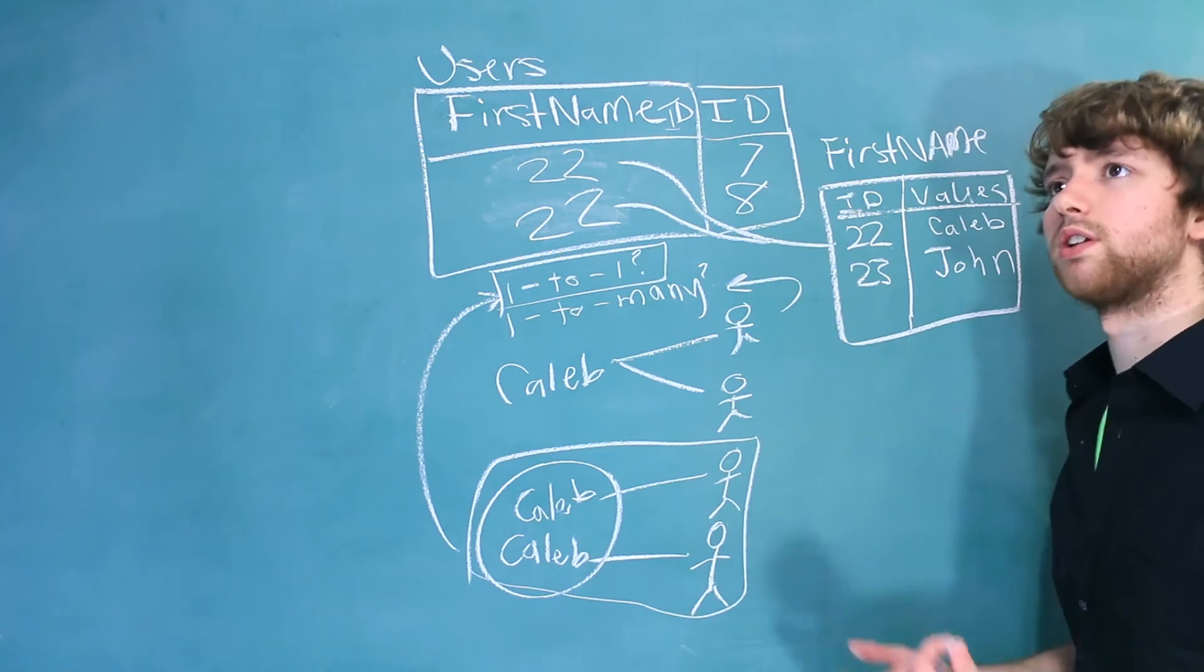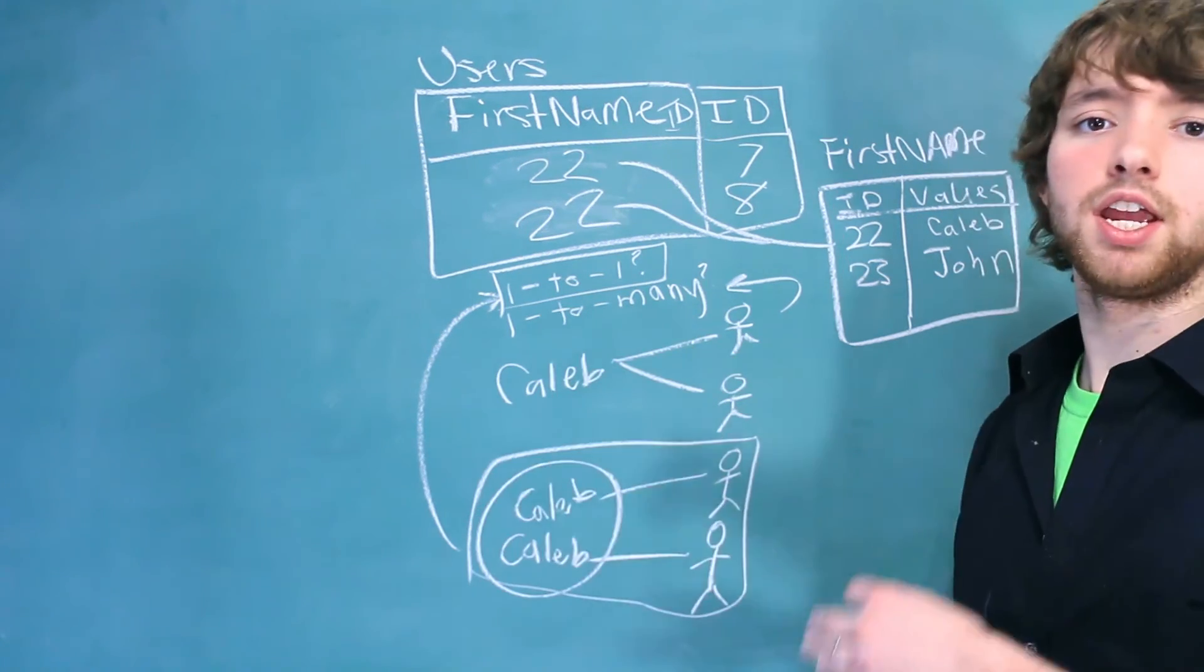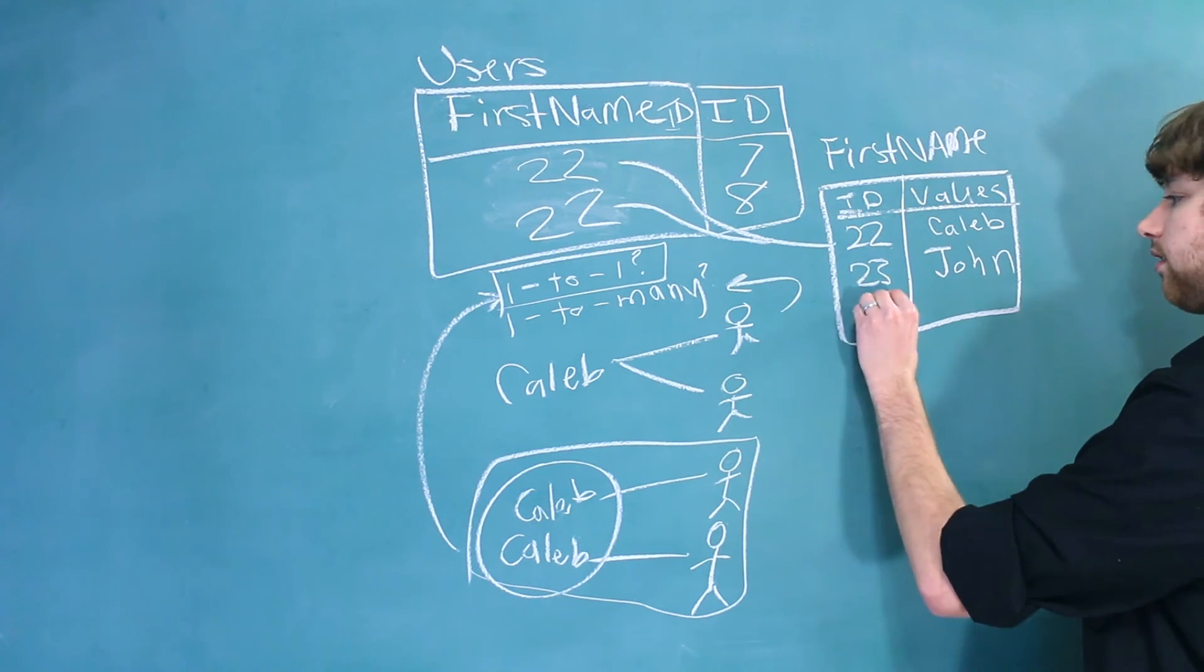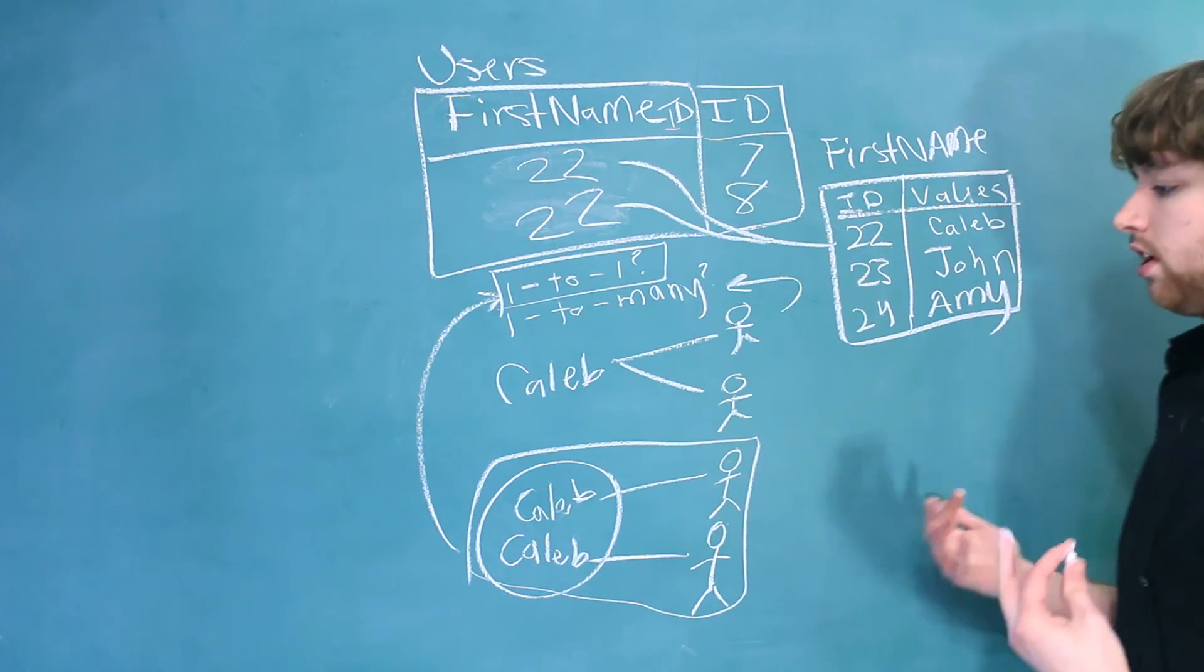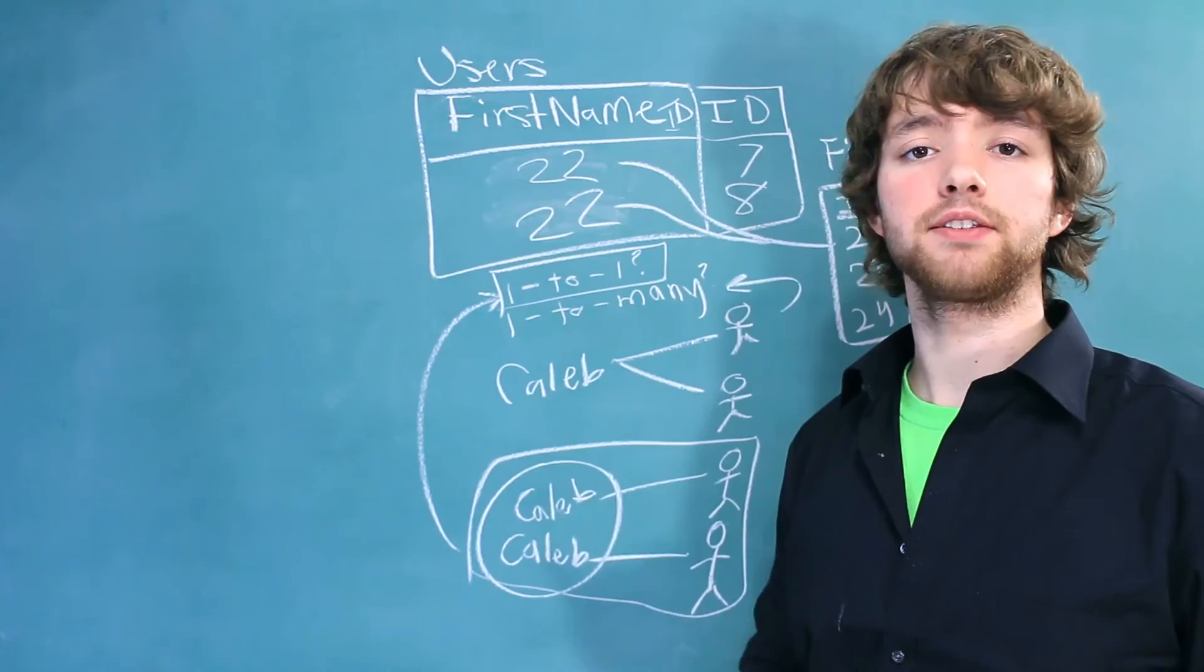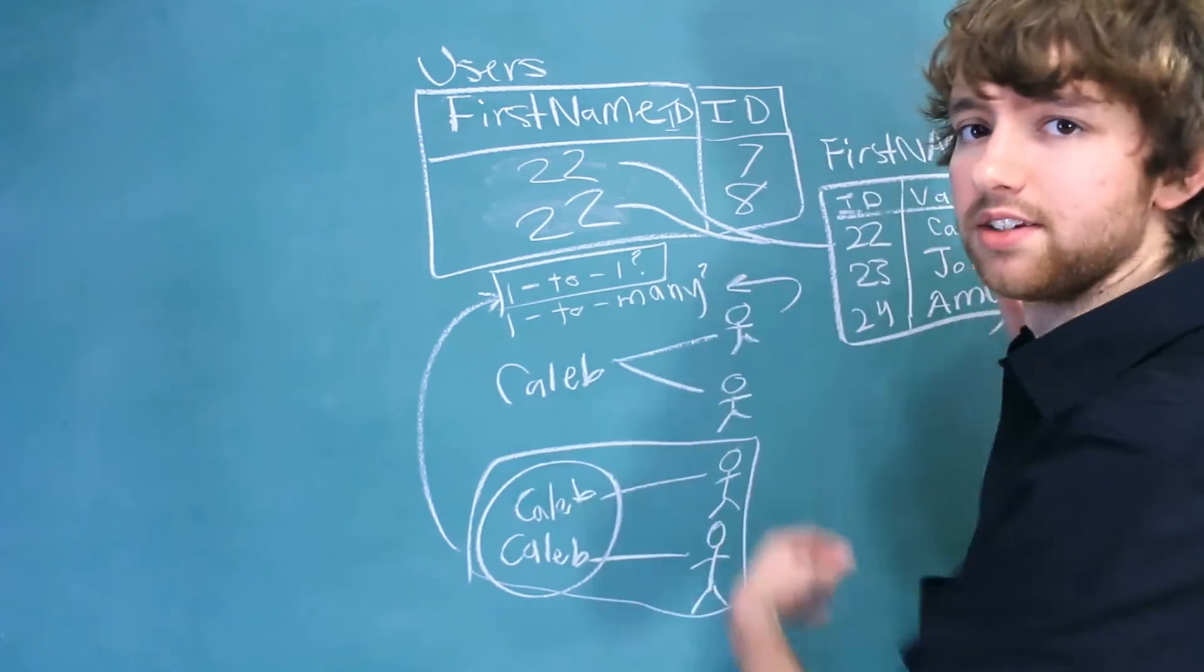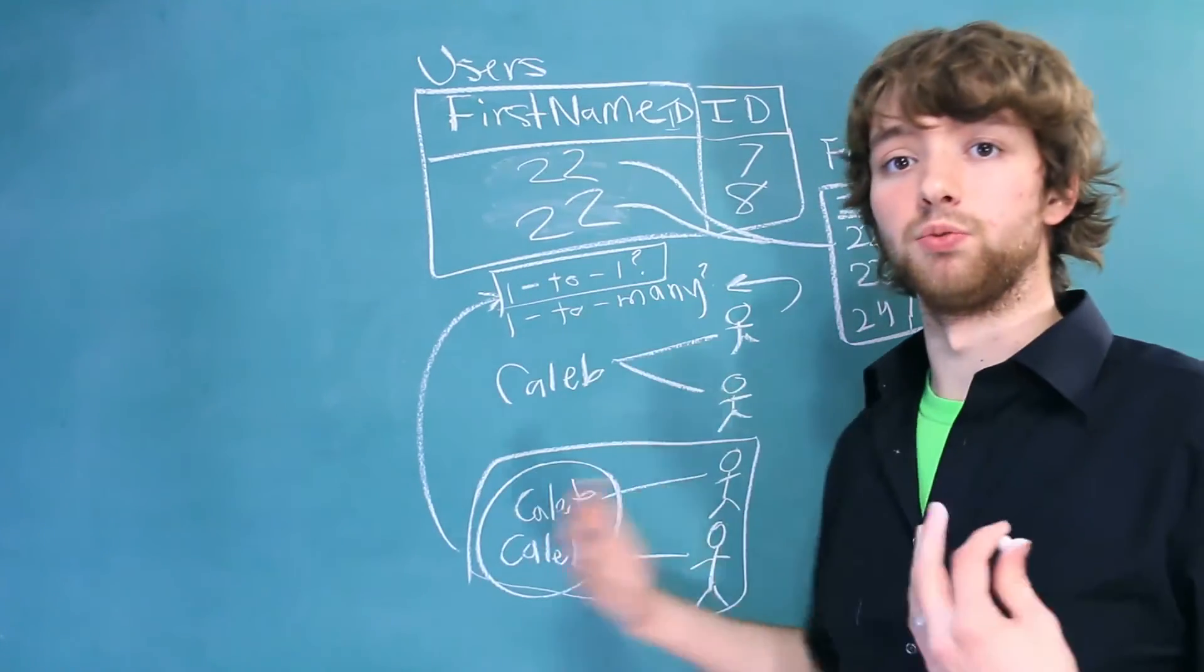Because then think about it. If someone comes and joins our app, and let's say their name's Amy, they are going to have to create a new row inside of the first name table because it doesn't exist. And overall, this is just a really dumb design. So if you're looking at it, and there's only going to be occasional repeating data by chance, and the column itself is not designed to be like a list of things you can choose from, then I would stick with the one-to-one relationship design.